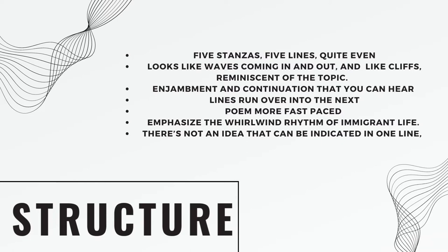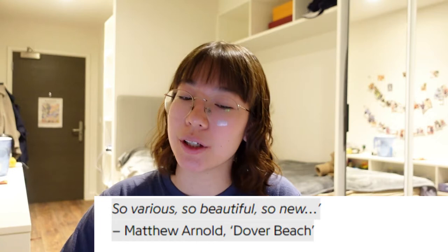The structure of the poem is five stanzas of five lines. It's quite even — it looks a lot like waves coming in and out, and also looks like cliffs, reminiscent of the topic explored. There's a lot of enjambment and continuation: the lines run over into the next, making the poem more fast-paced and emphasizing the whirlwind rhythm of immigrant life. There's not an idea that can be indicated in one line — likewise, the immigrant condition cannot be embodied in one phrase.